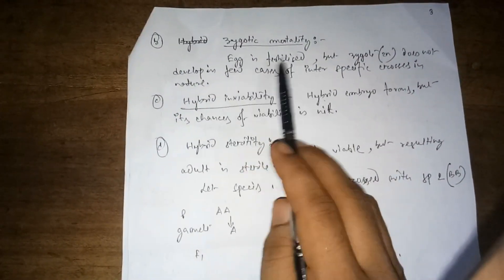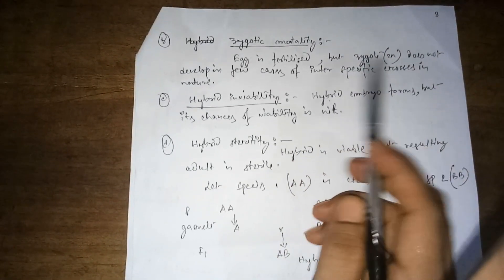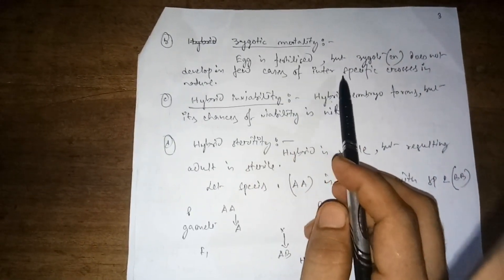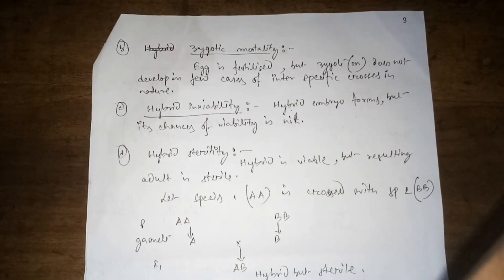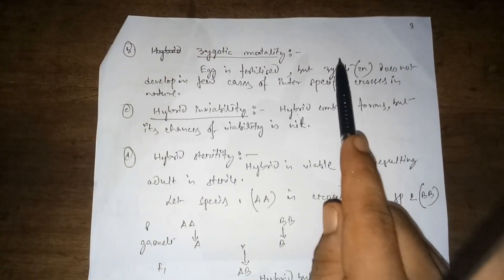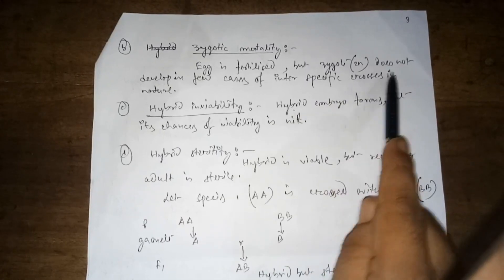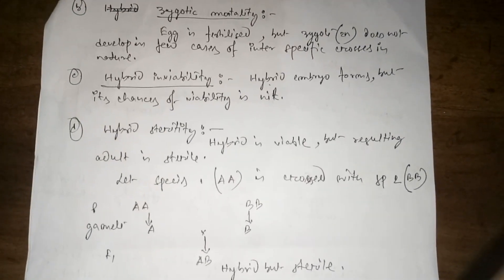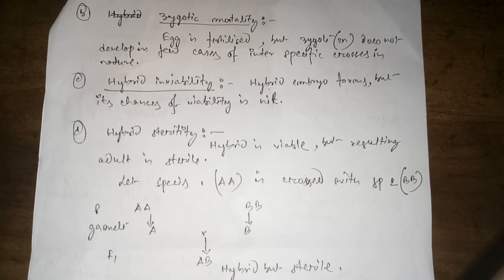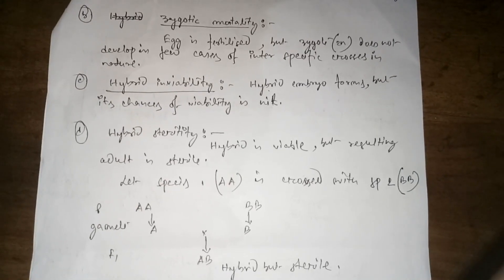Next, zygotic mortality: the egg is fertilized but the zygote does not develop. In some cases of interspecific crosses in nature, the egg gets fertilized but when it is time for zygote formation, it fails to develop.